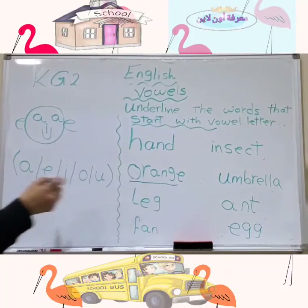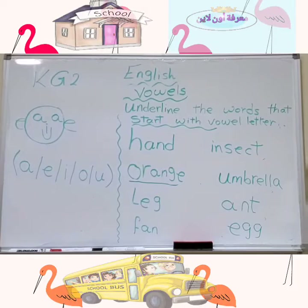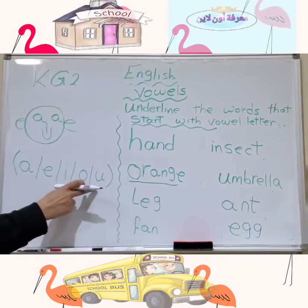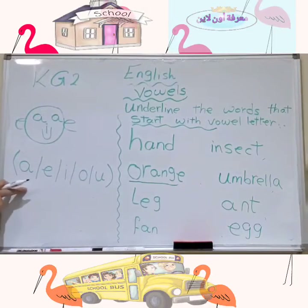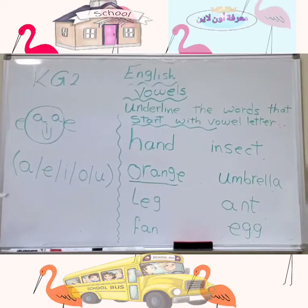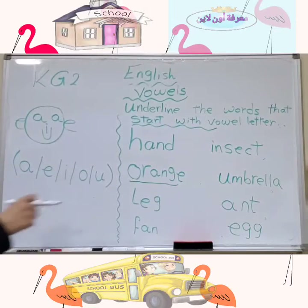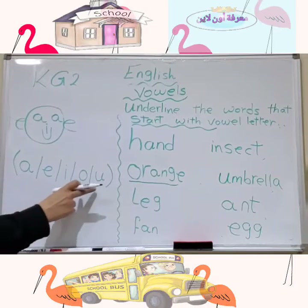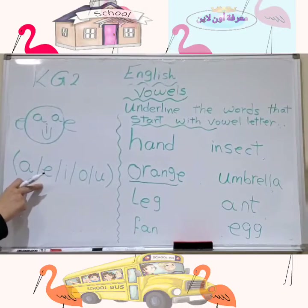'Leg' starts with the letter L. Is L a vowel? No, L is not a vowel, so we will not underline it. 'Fan' starts with the letter F. Is F a vowel? No, F is not a vowel.